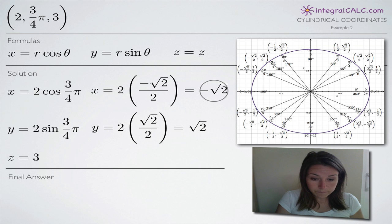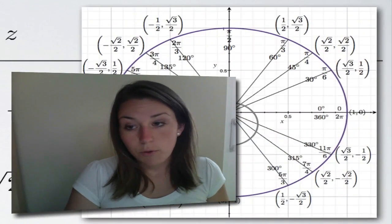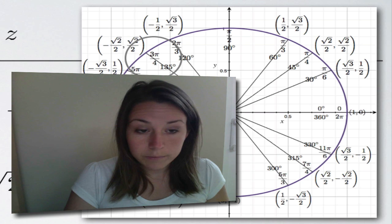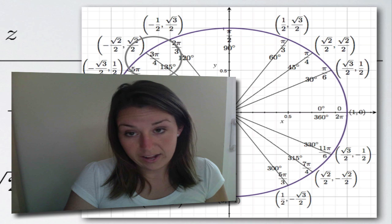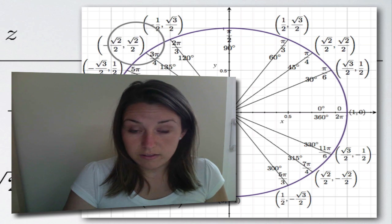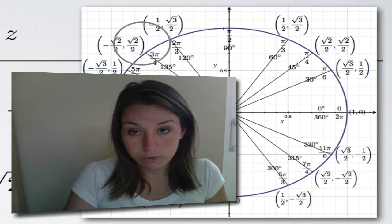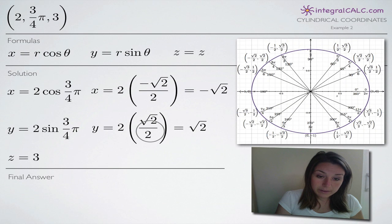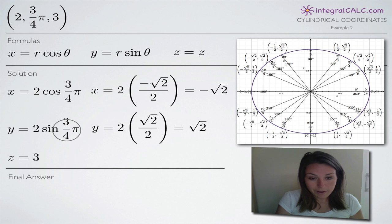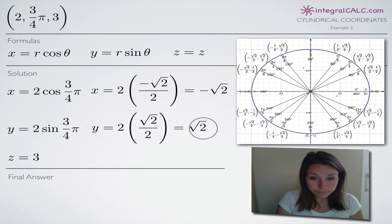For y, we're looking for sine of 3π over 4 on the unit circle. Since we're looking for sine, we use the y coordinate at that angle, which is positive square root of 2 over 2. We plug that in for sine of 3π over 4, the 2's cancel again, and we're left with positive square root of 2 for the y coordinate.